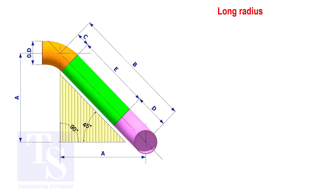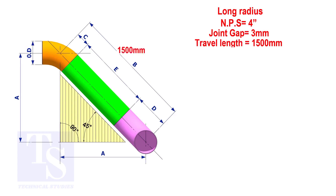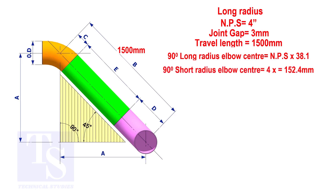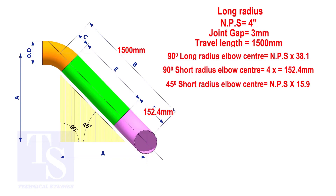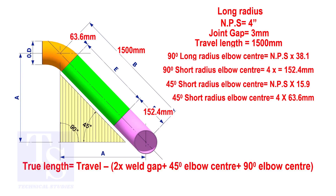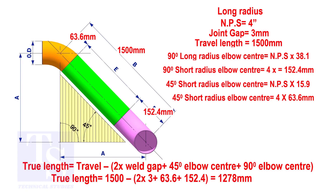Assume that the elbows are long radius. Calculate the true length of the pipe. The elbow center is the nominal pipe size multiplied by 38.1, so the elbow center of the 90 degree elbow is 152.4 millimeters. To calculate the elbow center of a 45 degree long radius elbow, multiply the nominal pipe size by 15.9. The answer is 63.6 millimeters. Applying the calculation, the true length of the pipe is 1278 millimeters.